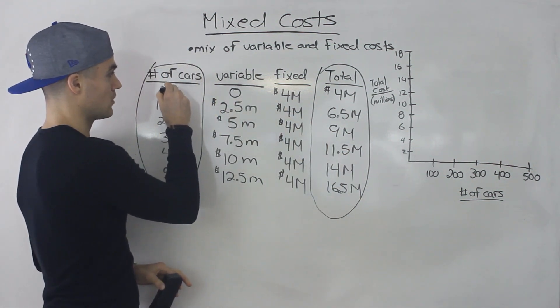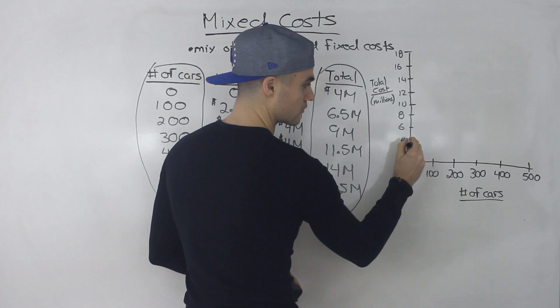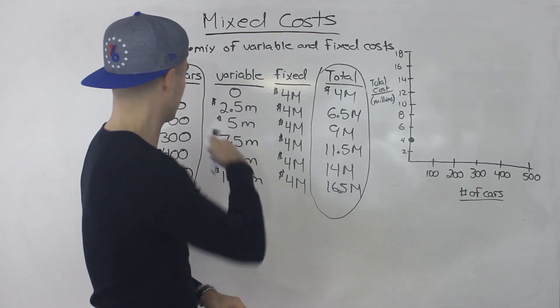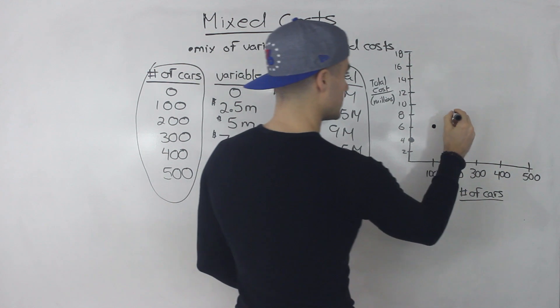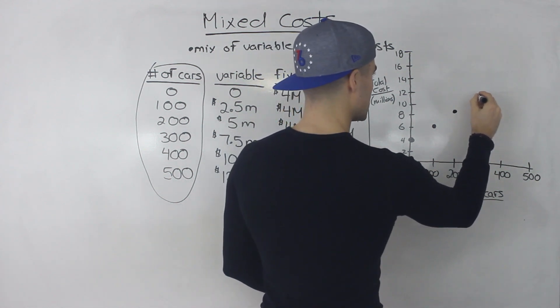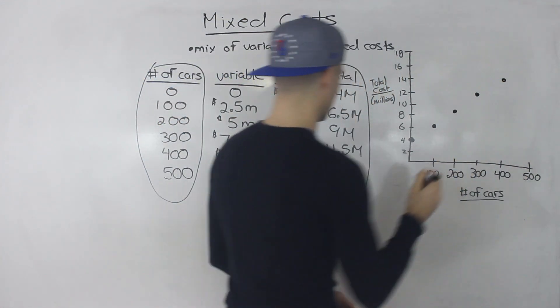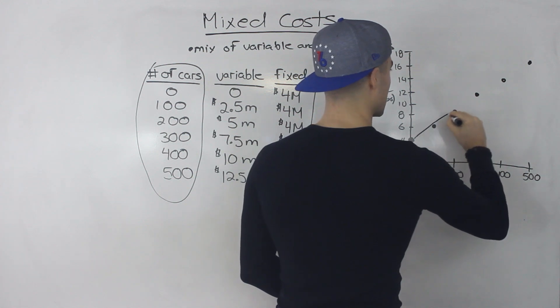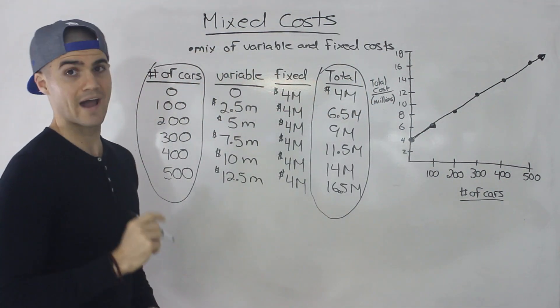So for an output of zero cars, we still have to pay that fixed cost of 4 million, even though there's no variable costs. And basically the y-intercept of a graph is always going to be the fixed cost amount. And then for 100 cars, we got 6.5 million. So that's going to be like over here. And then for 200, we got 9 million, which was going to be right in the middle there. 11.5 for 300, then for 400, we got 14 million, and then for 500, we got 16.5 million. This is maybe not the most to scale, but hopefully you get where I am going with this.